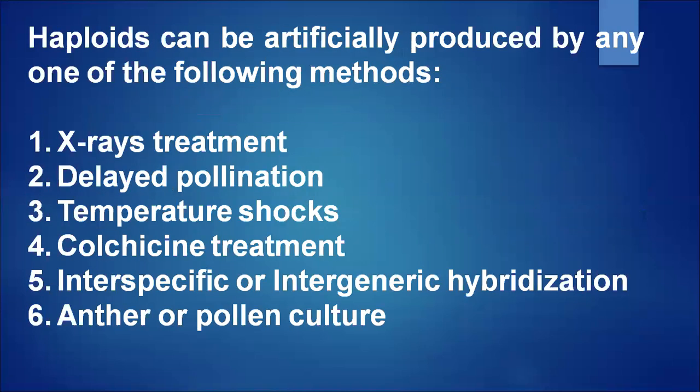Haploidy can be artificially produced by the following methods: X-ray treatment, delayed pollination, temperature shocks, colchicine treatment, inter-specific or inter-generic hybridization, and anther or pollen culture. Through these methods we can produce somatic haploidy artificially.